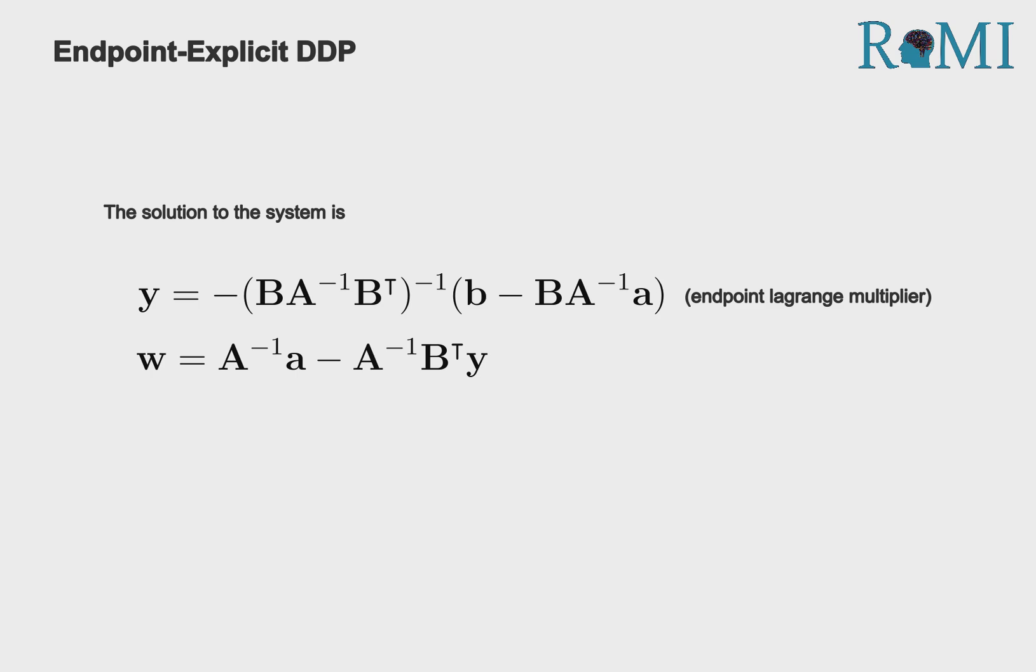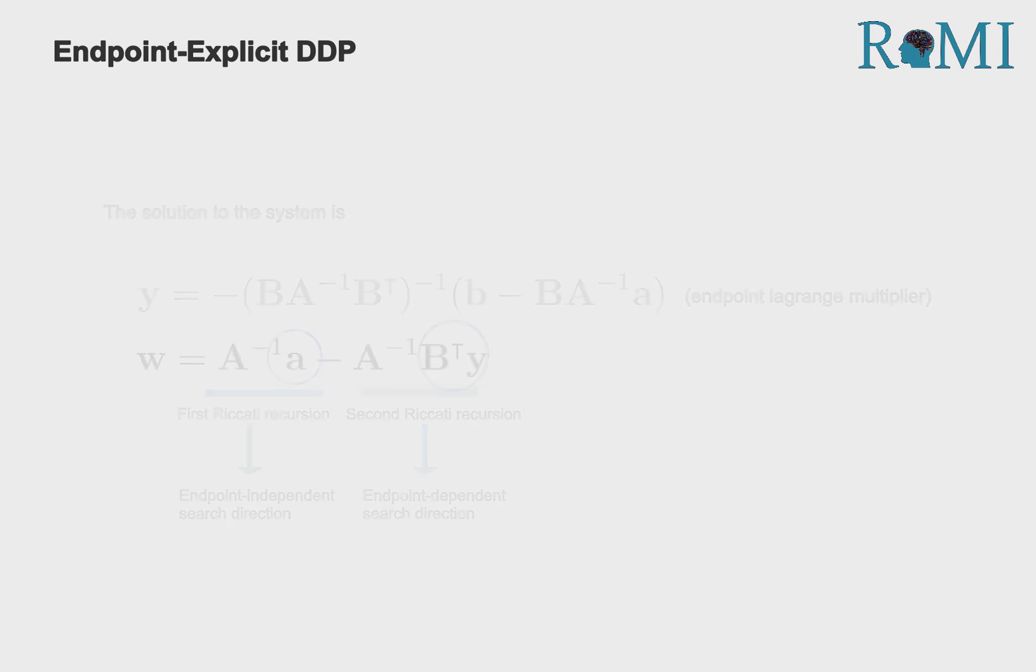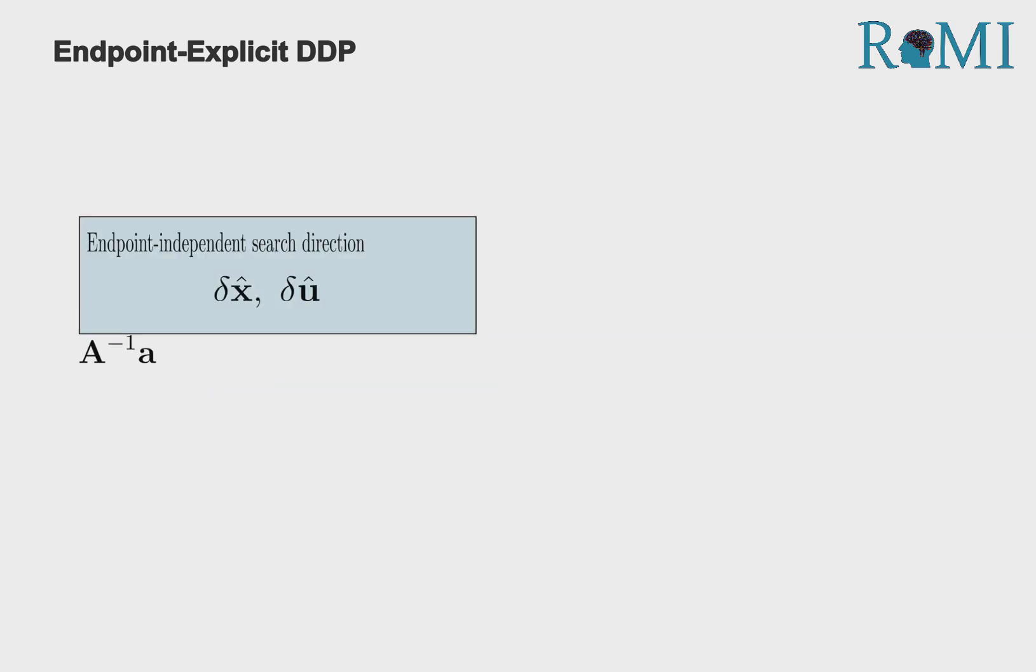This is achieved through two Riccati recursions with different initializations. Our algorithm begins by computing the search direction for the endpoint independent problem through a Riccati recursion, represented as A inverse times a.